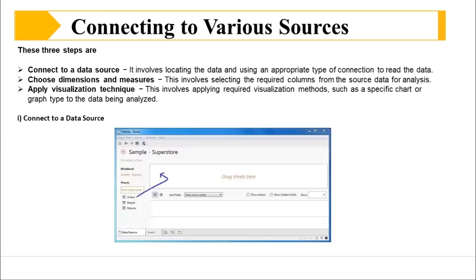The next step is how to connect to various data sources. There are three steps: first, connect to data sources, which involves locating the data and using an appropriate type of connection to read it. Then, choose the dimensions and measures, which involves selecting the required columns from the source data for analysis. Finally, apply your visualization techniques, which involves applying required visualization methods such as specific charts or graph styles.